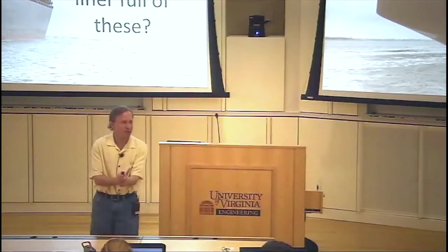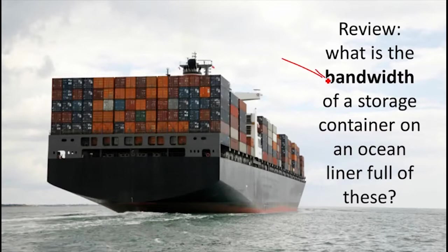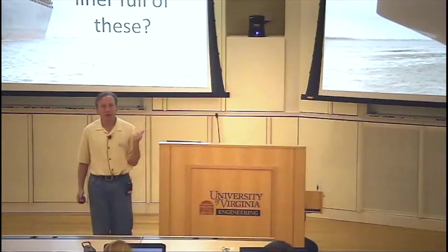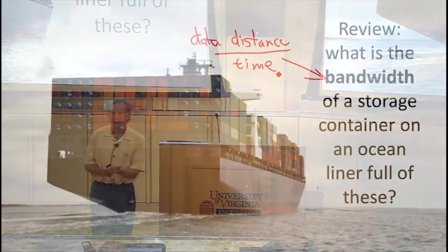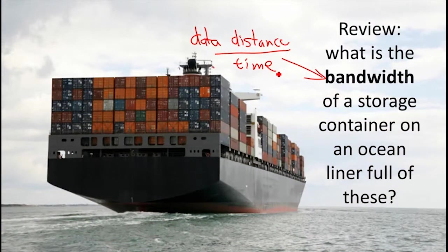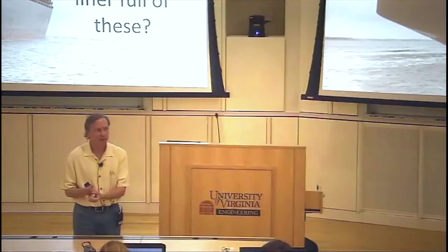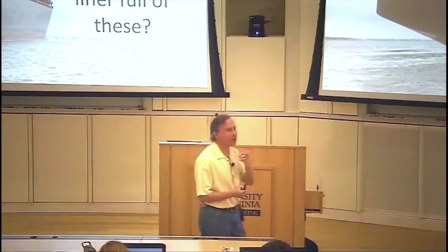So the latency is going to be horrible — we've got to wait two weeks to get this across the ocean. But the bandwidth is the data per time. It always has a distance component, though we often don't include it. So when people talk about gigabit Ethernet, gigabit means a billion bits per second. Where's the distance there, and why is there no distance there but there better be one here?